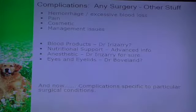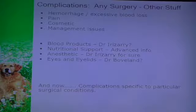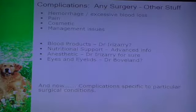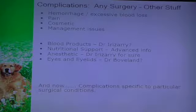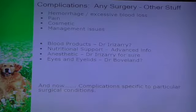Other surgical complications include hemorrhage, excessive blood loss, pain, problems with cosmesis - not getting a nice closure - and management issues. For example, doing an FHO on a 150-pound mastiff makes rehabilitation very challenging. Other complications involving blood products, nutritional support, anesthetics, and ophthalmologic issues are left to other specialists. If everything were covered, this could be a week-long course, so we're focusing on surgical topics.